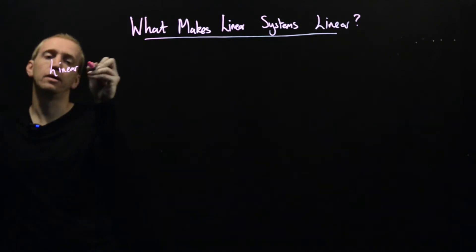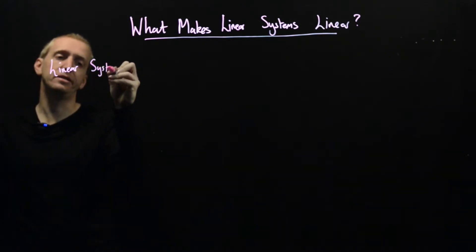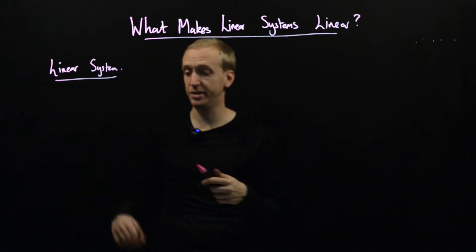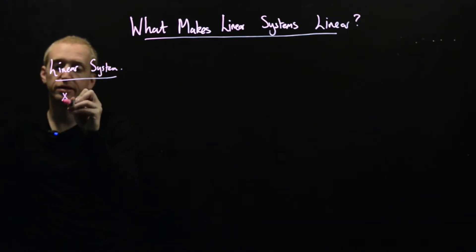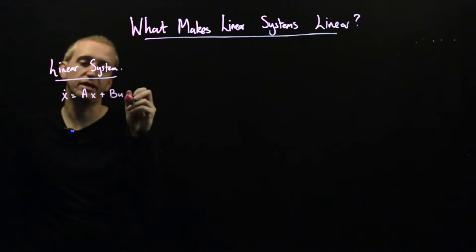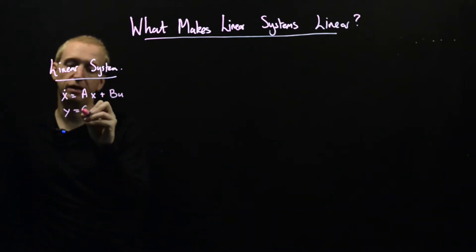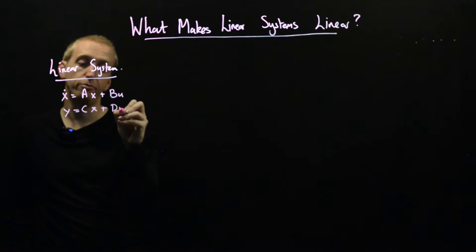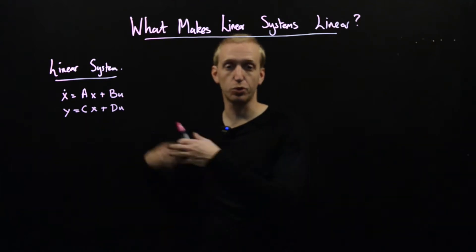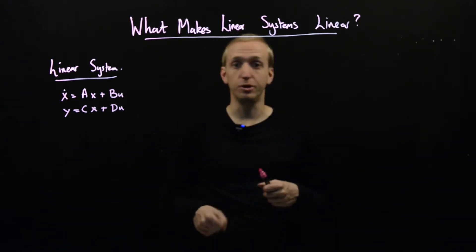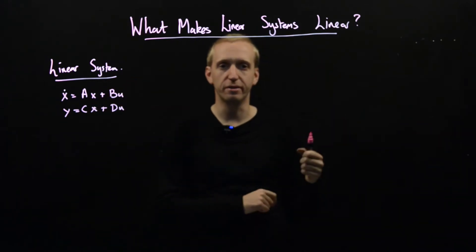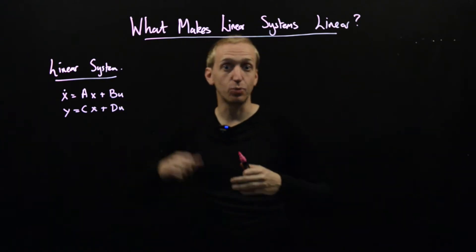You may have had this presented to you in transfer function form, but for our purposes we're going to say that a linear system is a set of differential equations on this particular form here. This variable x is the state of the system and this describes its configuration. So if you're describing the model for a robot, this vector x will contain all of the lengths and angles and things in the joints as well as their velocities.